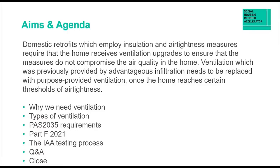So, aims and agenda. With domestic retrofits that employ insulation and air tightness measures, we need to make sure we're upgrading ventilation to ensure we don't compromise the air quality of the home — in fact, we want to improve it, because even uninsulated homes can have quite poor air quality. Ventilation previously provided by advantageous infiltration needs to be replaced with purpose-provided ventilation once the home reaches a certain threshold of air tightness. We'll cover background on why we need ventilation, what types there are, PAS 2035 requirements, new Part F 2021 requirements, and the IAA testing process.